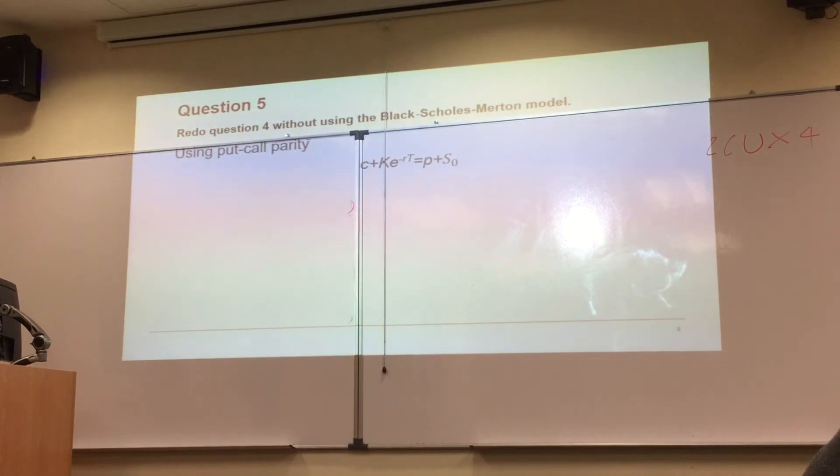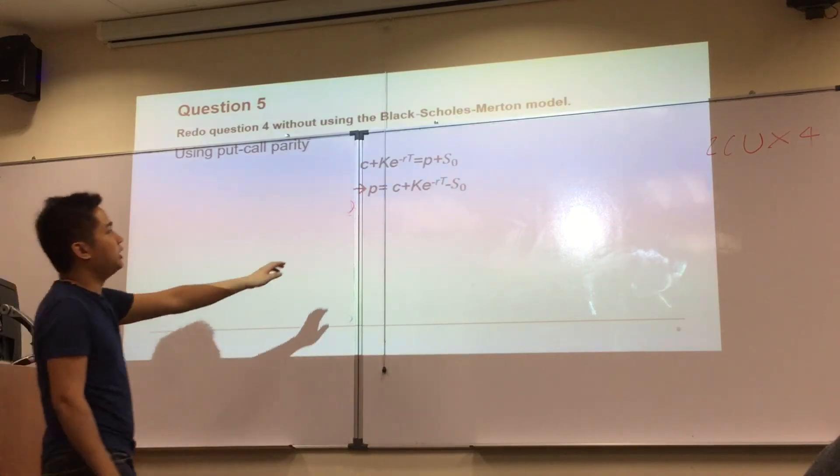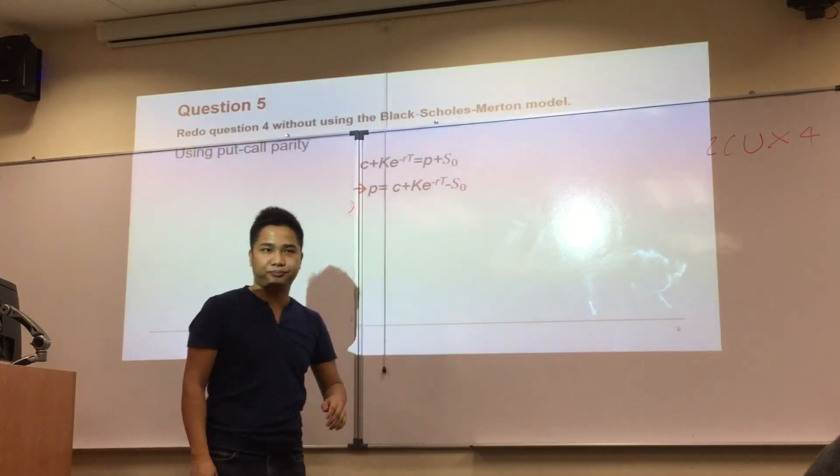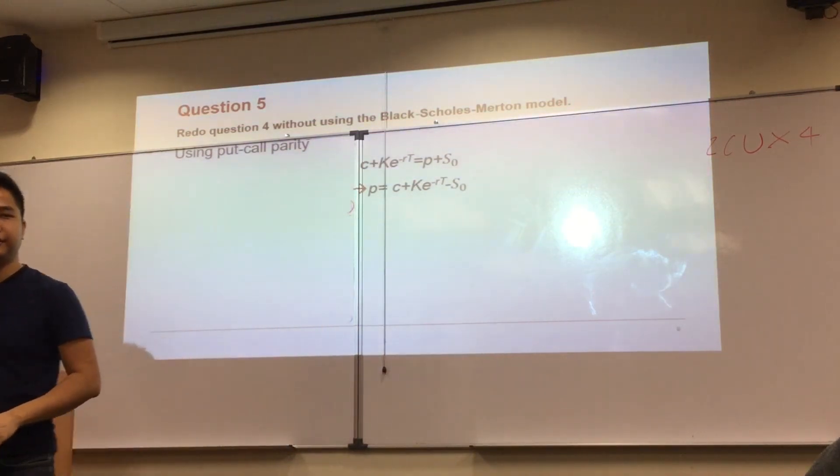We're going to use the put-call parity, where C plus K e to the minus RT equals P plus S0. You have everything. You want to calculate P. So you rearrange this equation. You got P equals C plus K e to the minus RT minus S0.